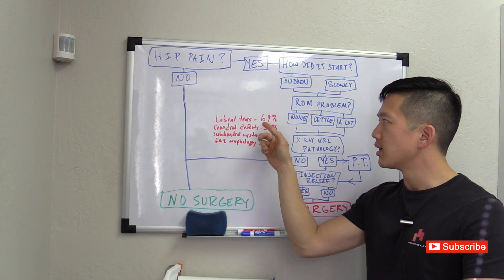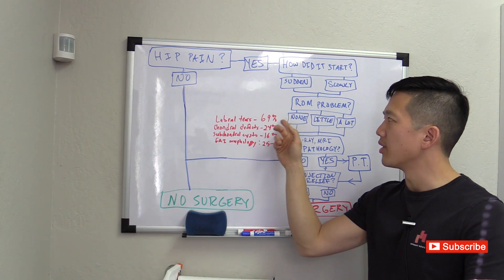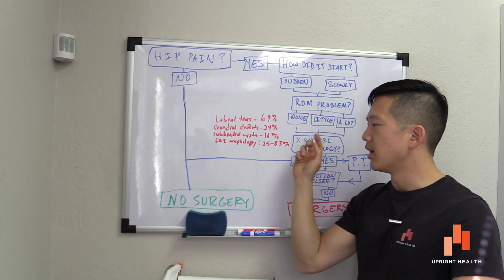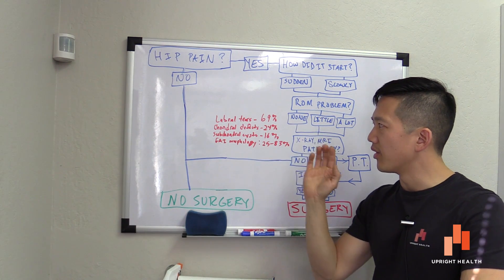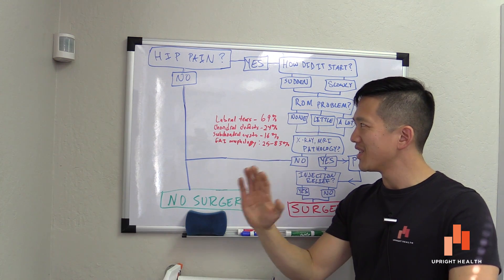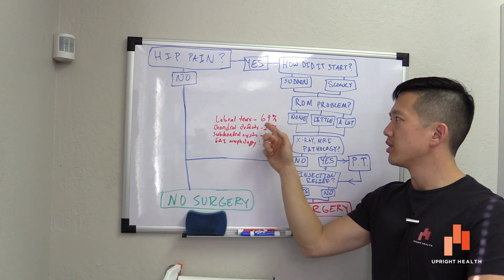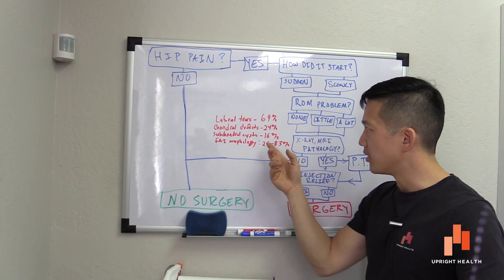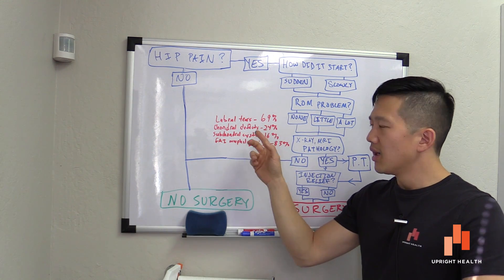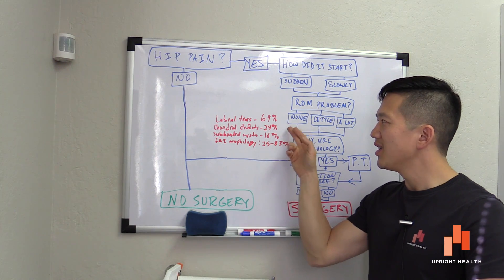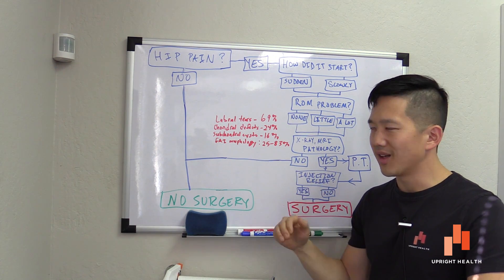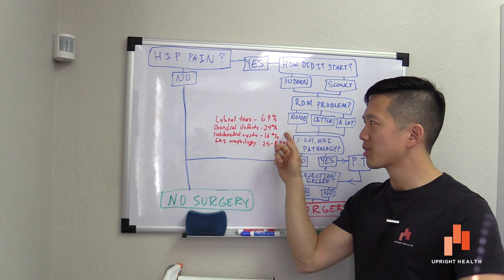When you do x-rays and MRIs on people who are totally without hip symptoms, you have a very high prevalence rate of pathologies. For example, labral tears - this is one paper that showed labral tears, chondral defects, and subchondral cysts in a group of about 40 people. These are 40 asymptomatic people. They found labral tears in 69%, chondral defects in 24%, subchondral cysts in 16%. So you're able to find these things in people who have no problems. So it's highly unlikely that those are the cause of people's problems.